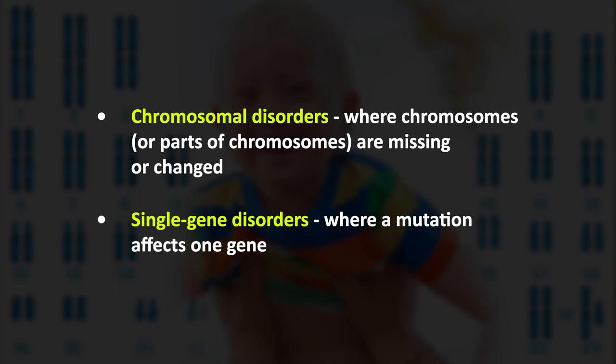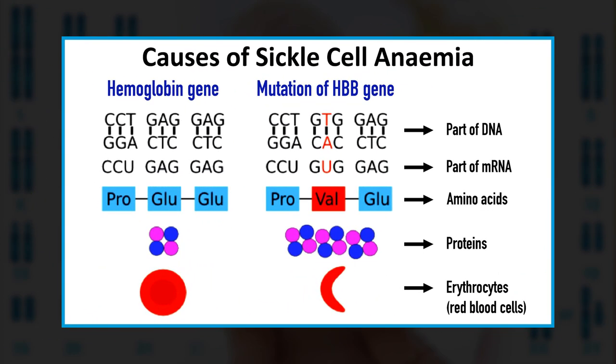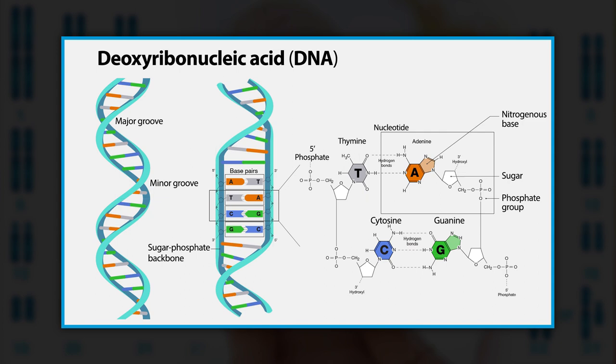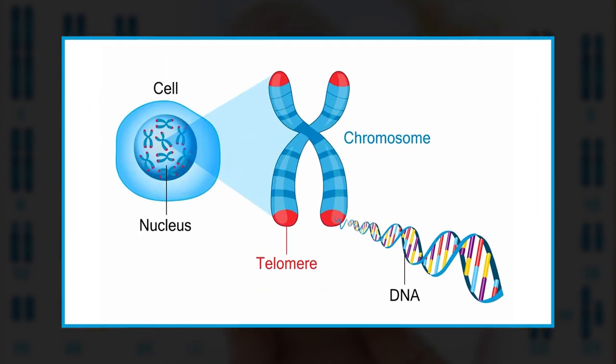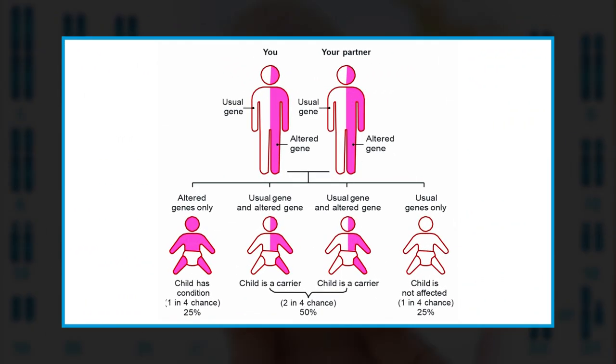Chromosomal disorders are those where chromosomes or parts of chromosomes are missing or changed. Single gene disorders, by contrast, are where a mutation affects only one gene — sickle cell anemia is an example. Changes in one or more base pairs of the DNA in a gene create a variant that may affect how the gene works. These changes do not affect chromosome structure and thus cannot be seen on karyotype analysis. Over the last several years, the study of chromosomes has proven most fruitful in understanding genetic diseases.